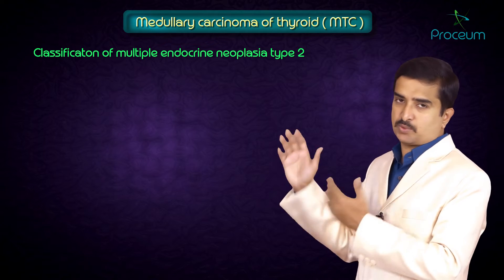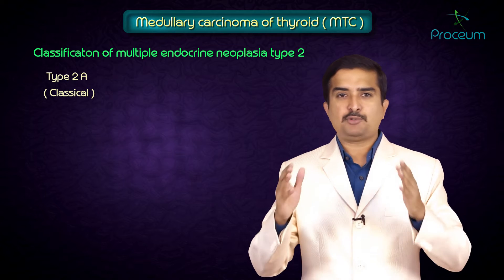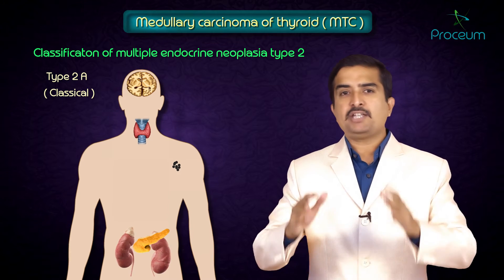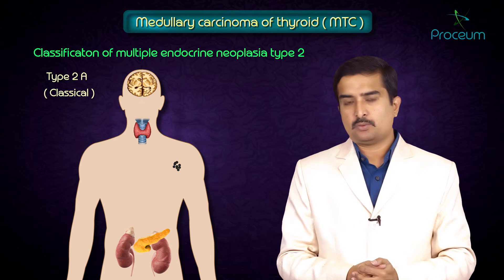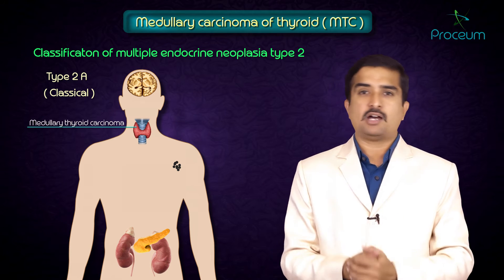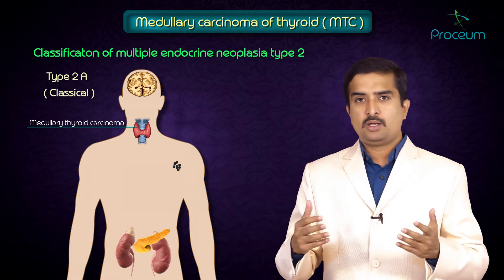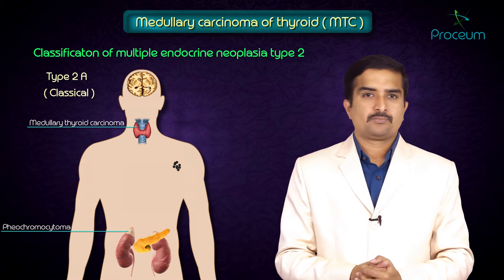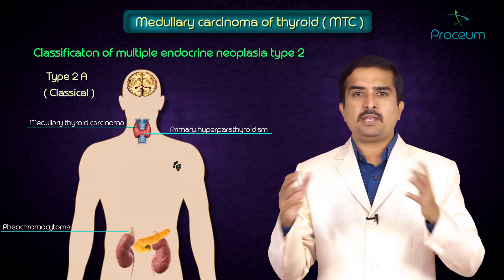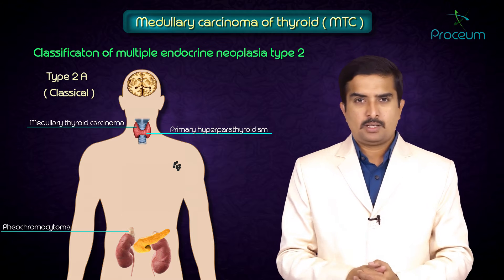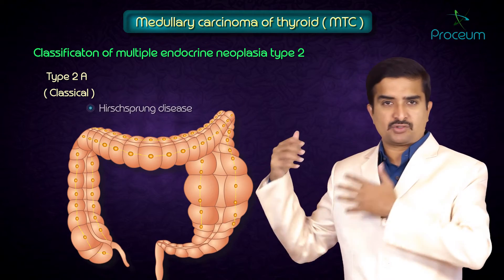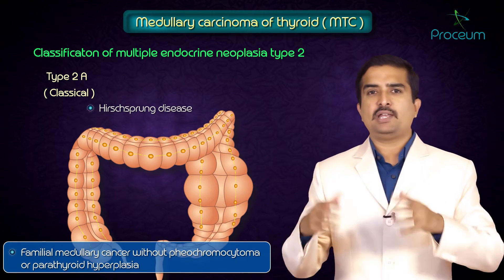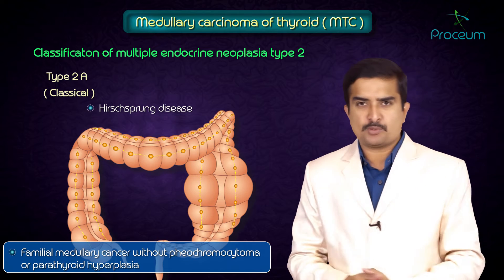MEN2A is the classical form, where medullary carcinoma of the thyroid occurs with pheochromocytoma and primary hyperparathyroidism. Subtypes include MEN2A with cutaneous amyloidosis and MEN2A with Hirschsprung disease, as well as familial medullary cancer without pheochromocytoma or parathyroid hyperplasia.